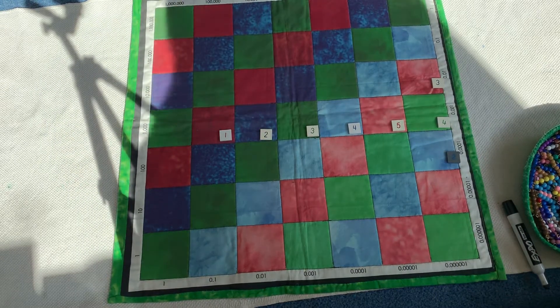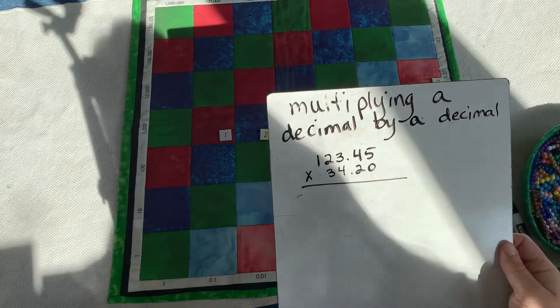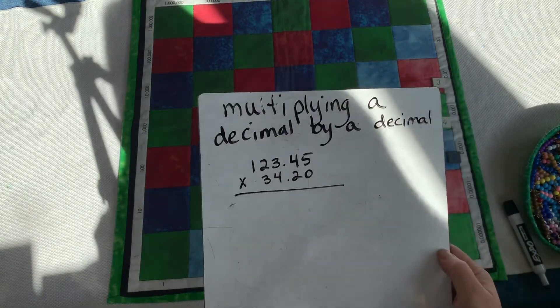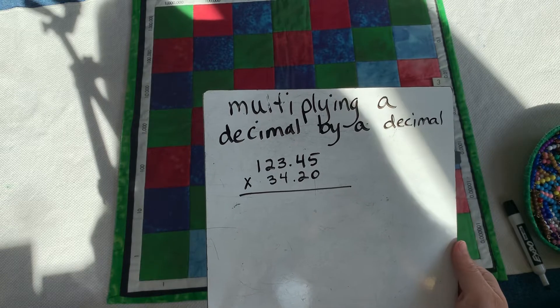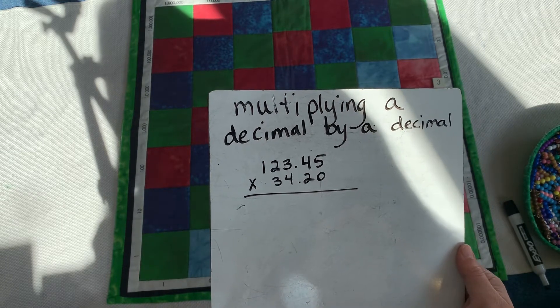Welcome back to our decimal checkerboard map. We're going to be multiplying a decimal by a decimal. We're going to do 123.45 times 34.20, or you could say it 34.2.